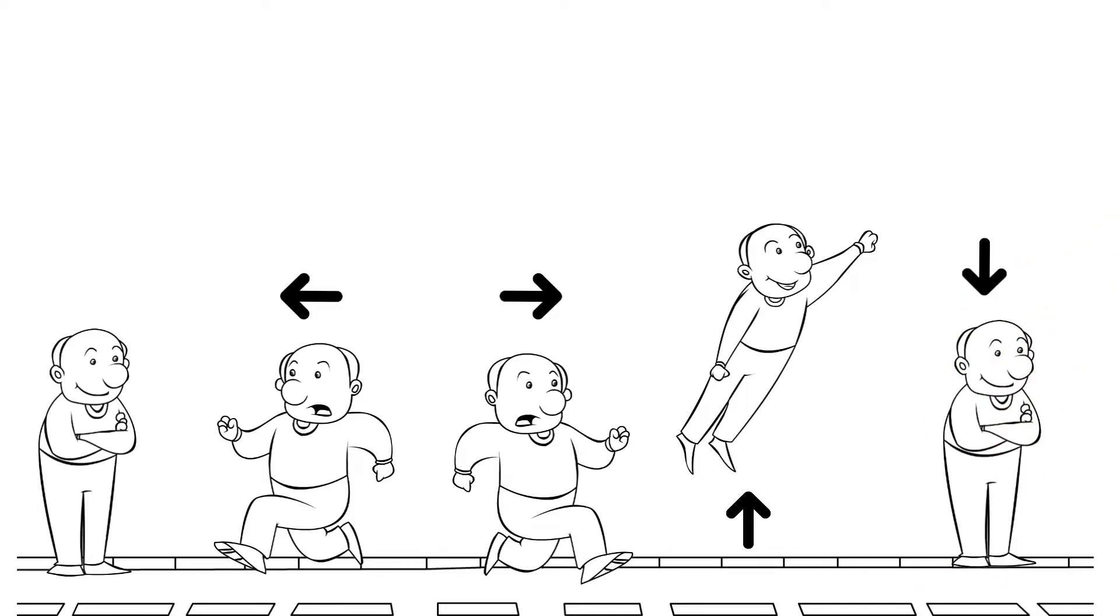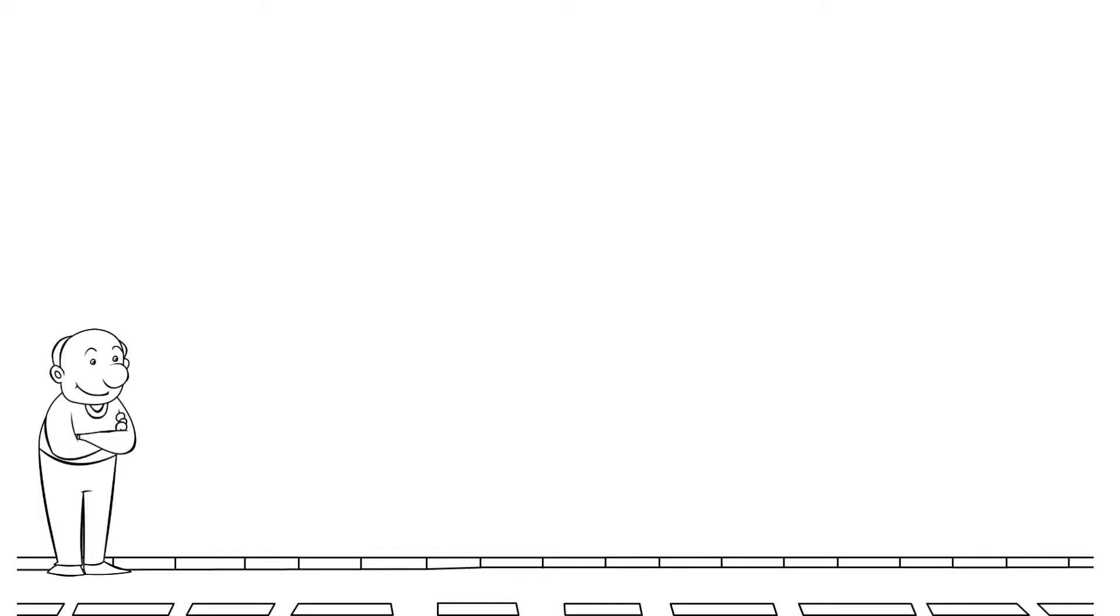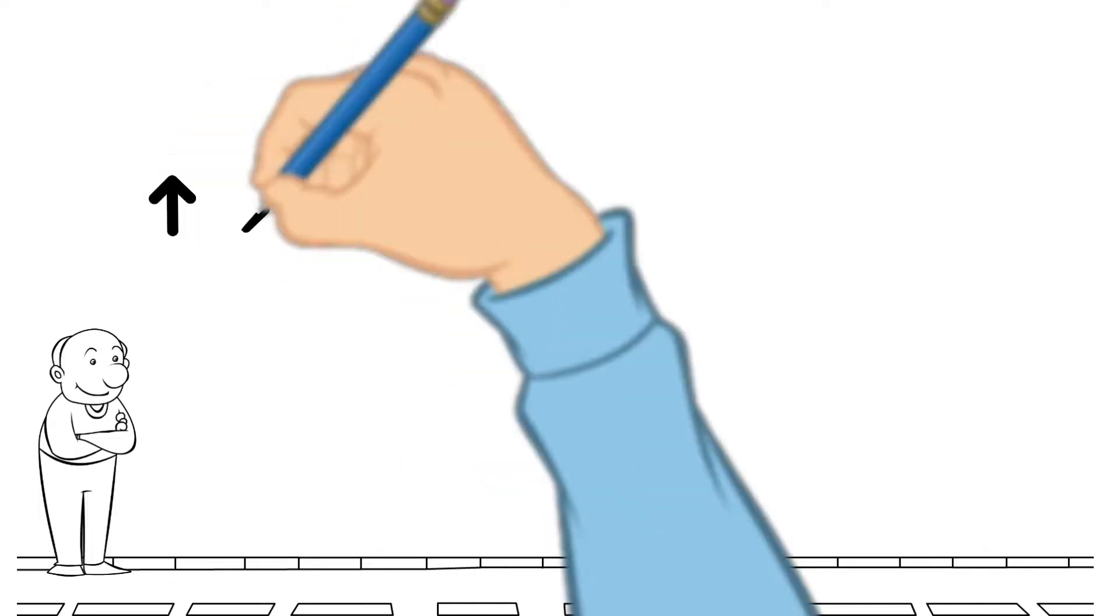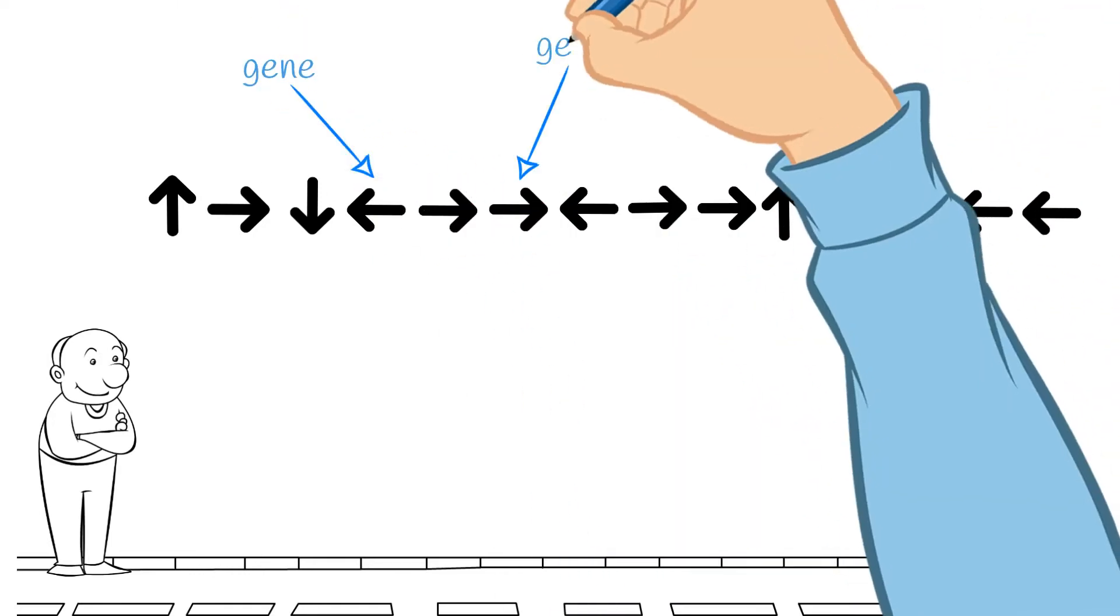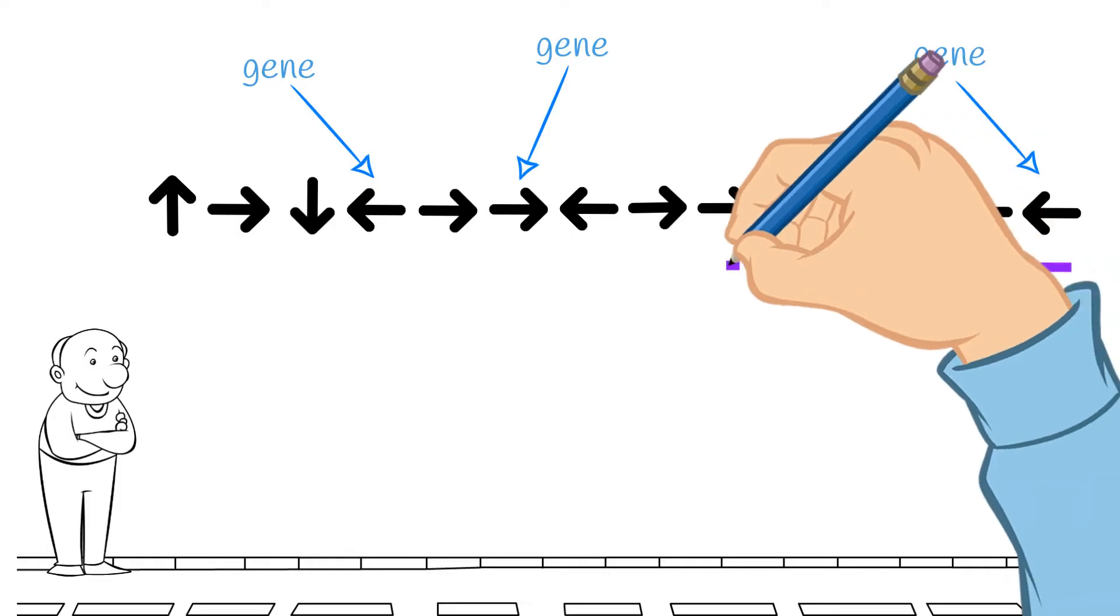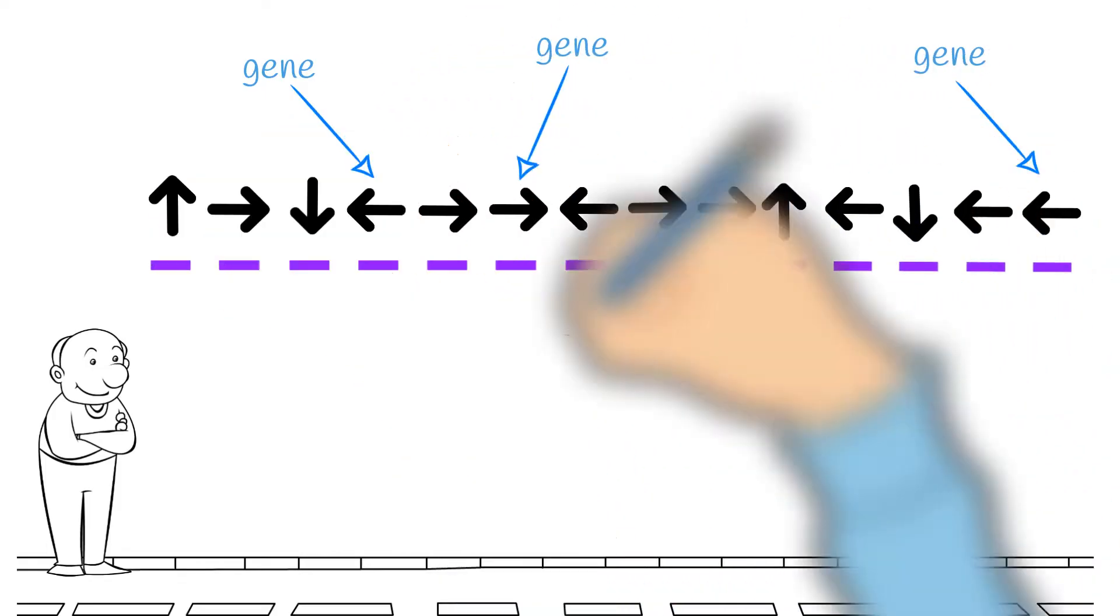Let's see how we can string these controls together to create something called a DNA strand. We'll give Jonathan a string of 14 actions to take, each one randomly selected. Each action can be called a gene, and when the genes are combined in this way, the entire strand is called the DNA.